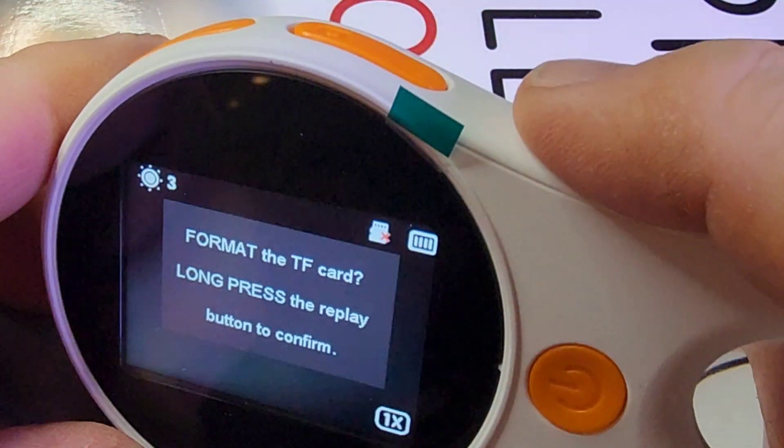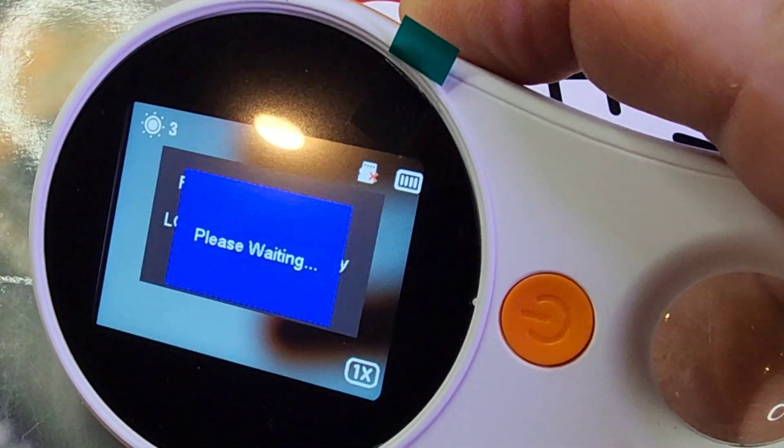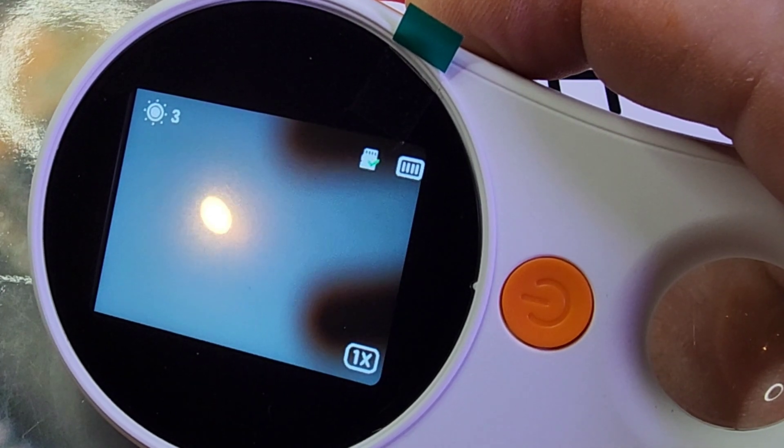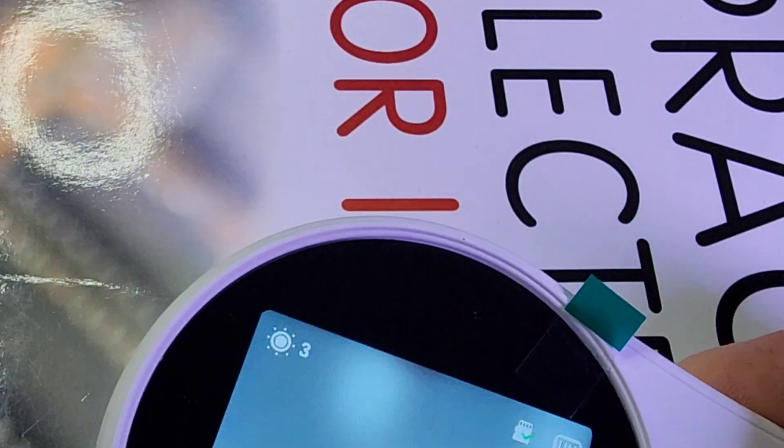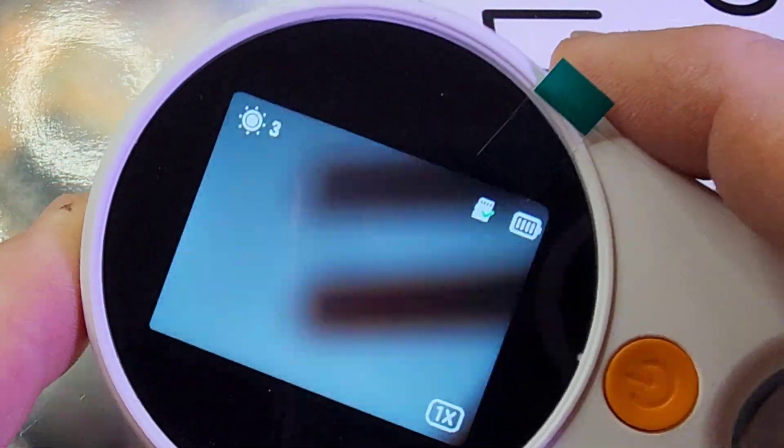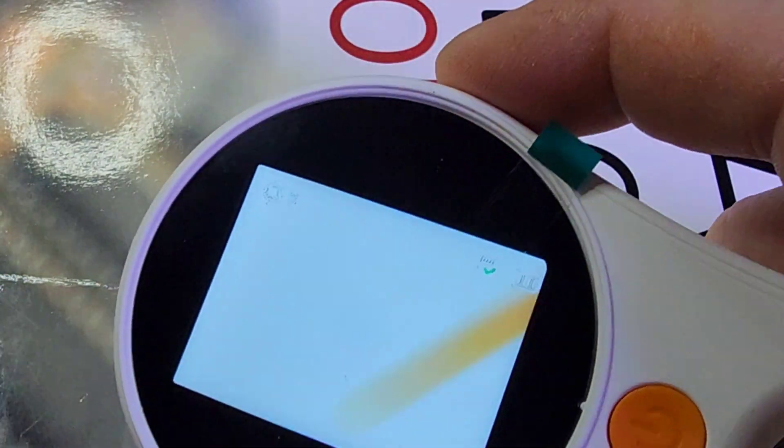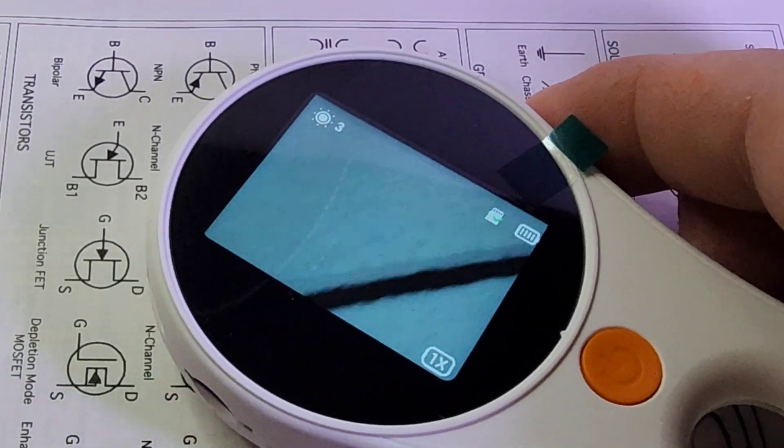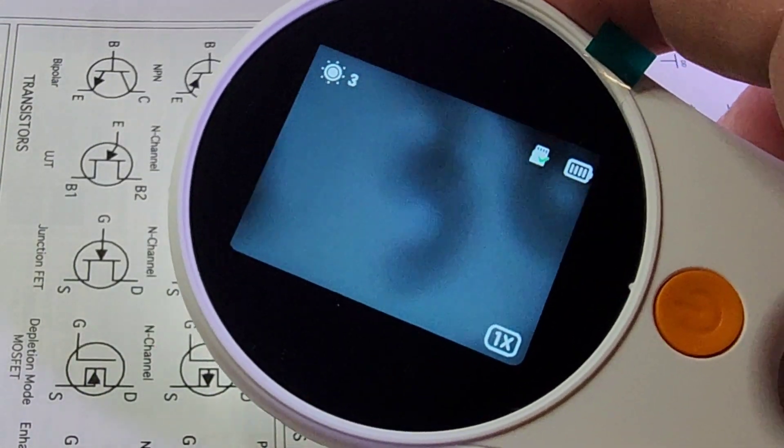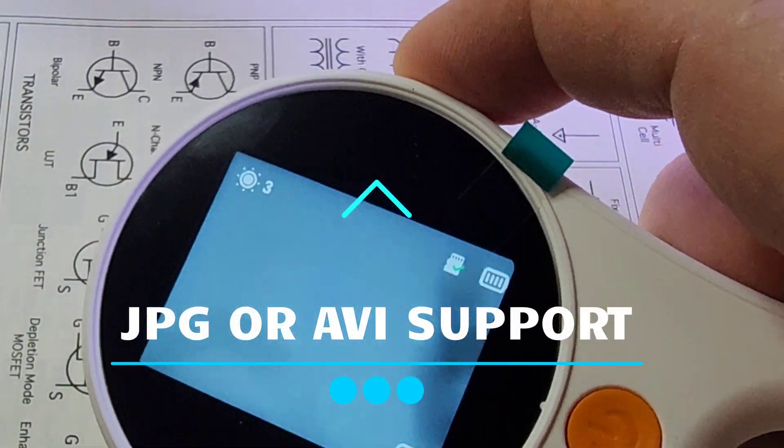Now, here I'm sticking in a 32 gig SD card. Bada boom, bada bing, goes just like that. A little awkward maybe to get it in there. But first time this can ask you if you want to format your card, just long press and it automatically formats. Now, of course, if you have data or pictures, you might not want to do that. Now, you can take JPEGs or AVI video as well with this unit. So that's kind of cool.